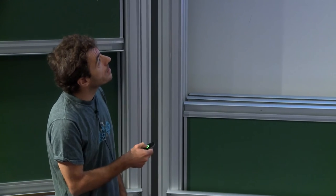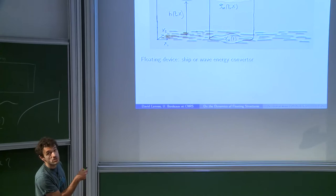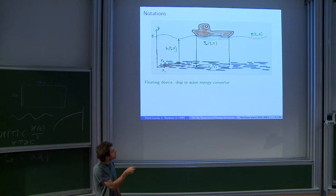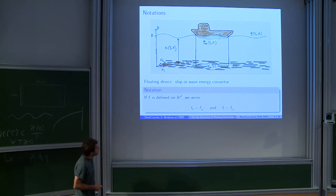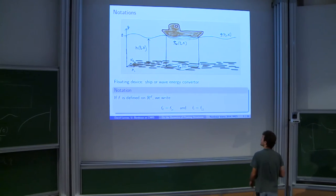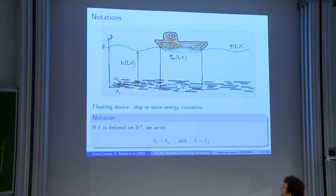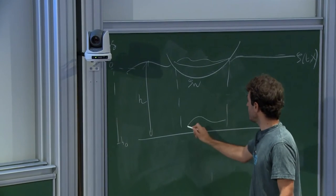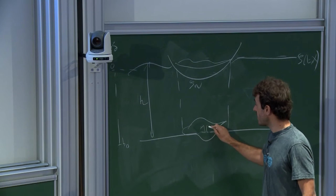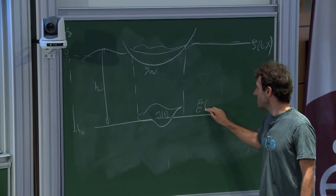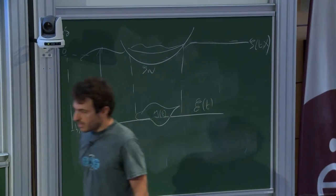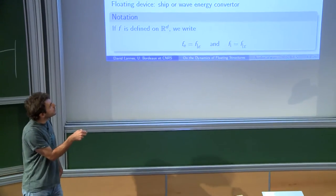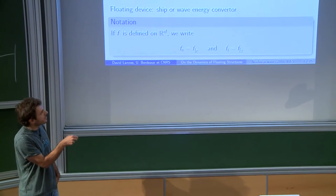We want to understand this double free boundary problem. It's a double free boundary problem because we have one free boundary here, which is the standard water wave problem. And the second one is that you have to know the dynamics of this boundary, which is the geometry of the wetted region and how it evolves. For this talk, I will use this notation for interior and exterior region. If I take the projection of the wetted region on the horizontal plane, I find some two-dimensional domain which I will call I(t) — like I for interior. The complement of this region in R^d will be called E(t), the exterior domain. The restriction of any function on the exterior domain will be denoted f_e, and the restriction on the interior domain will be f_i.